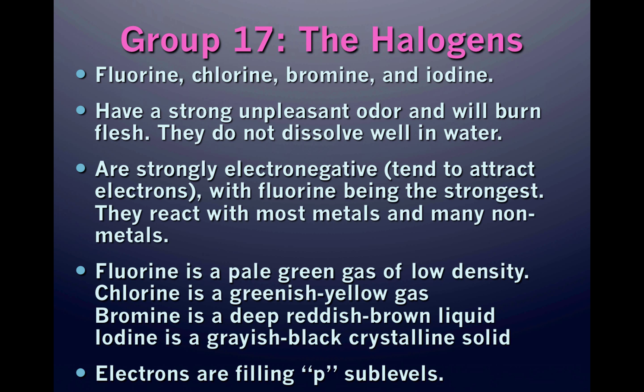Group 17 are the halogens: fluorine, chlorine, bromine, and iodine. They are all diatomic — fluorine and chlorine are gases, bromine is a liquid, and iodine is a solid. The halogens have a strong, unpleasant odor and will burn flesh. They do not dissolve well in water. The halogens are strongly electronegative, meaning they tend to attract electrons and are strong non-metals. Fluorine is the most reactive non-metal and has the largest electronegativity.